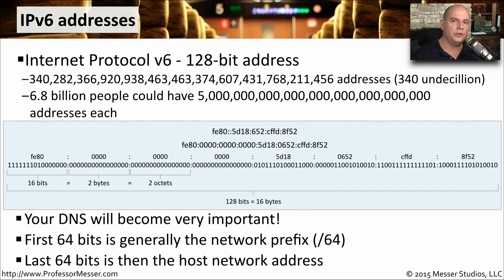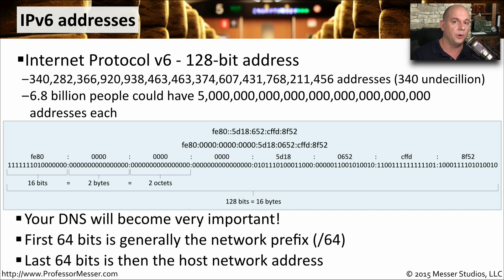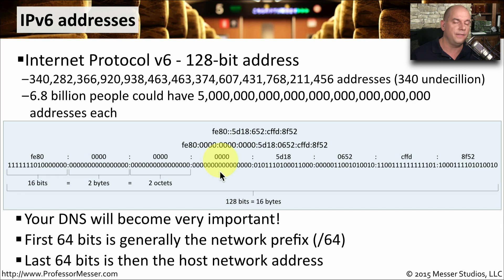With IPv4, the address is relatively small — we could even tell somebody what it is, and it was easy to write down. But IPv6 addresses are quite long, so instead of referencing everything with an address, we're probably going to use names much more often, making domain name servers very important. We usually separate an IPv6 address into two different pieces: generally speaking, the first 64 bits are the network address or network prefix.